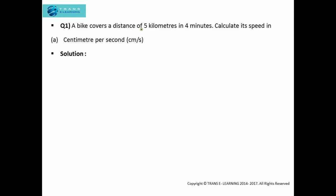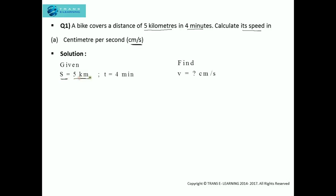The first question: a bike covers a distance of 5 km in 4 minutes. Calculate its speed in cm per second. First of all, we need to analyze what is given and what needs to be found. The given values are distance = 5 km and time = 4 minutes, and we need to find the speed in cm per second.